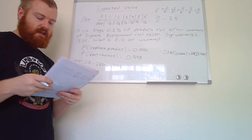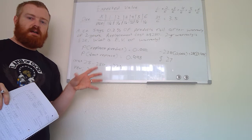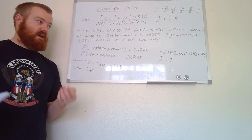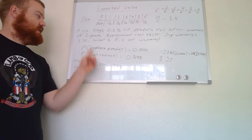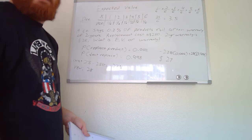The expected value is $27. So on average, accounting for the products they have to give away for free under warranty and taking the money from warranties where products don't break, the company makes $27 per warranty sold on average. Since the warranty costs $28, the company makes quite a bit of their money back for every single one of these.